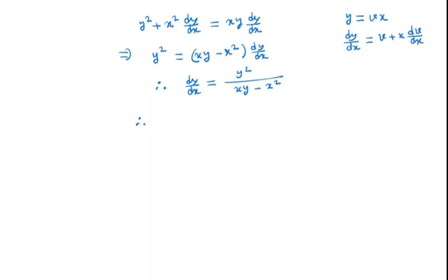So we have v plus x dv dx is y squared means v squared x squared over x times vx minus x squared. So v squared x squared in the denominator if we take x squared we have v minus 1. So we get this as v squared by v minus 1.